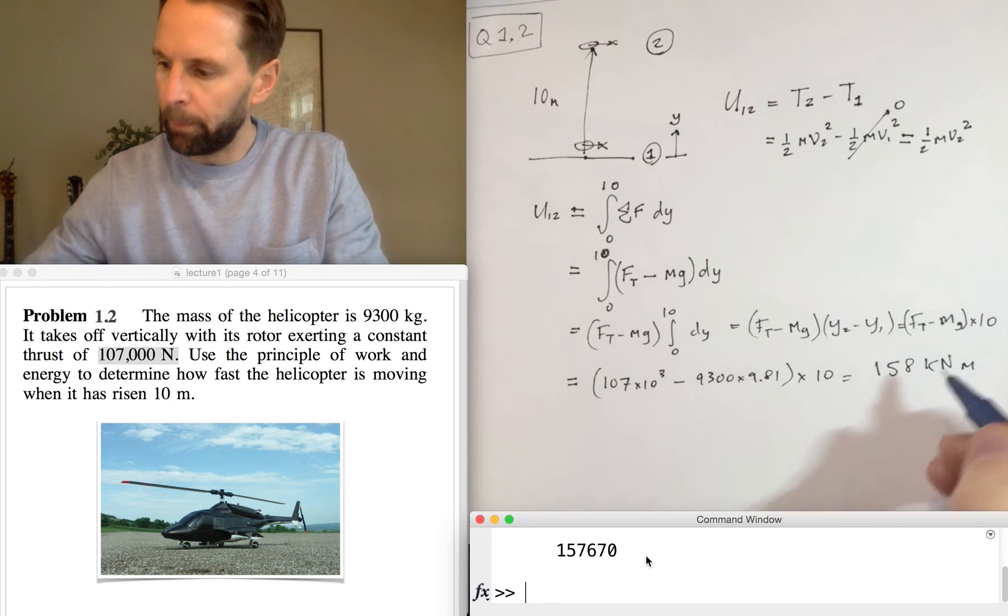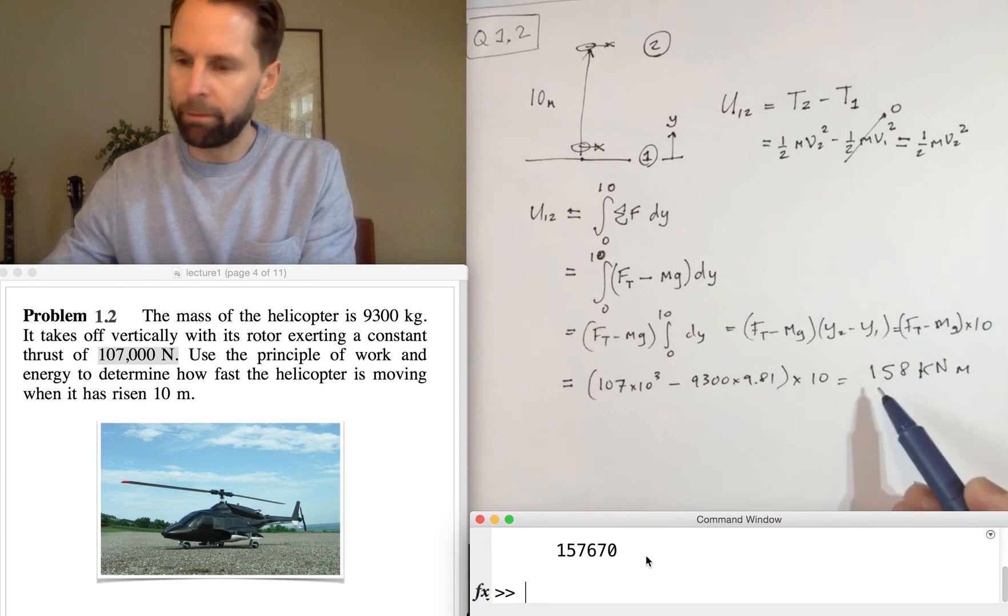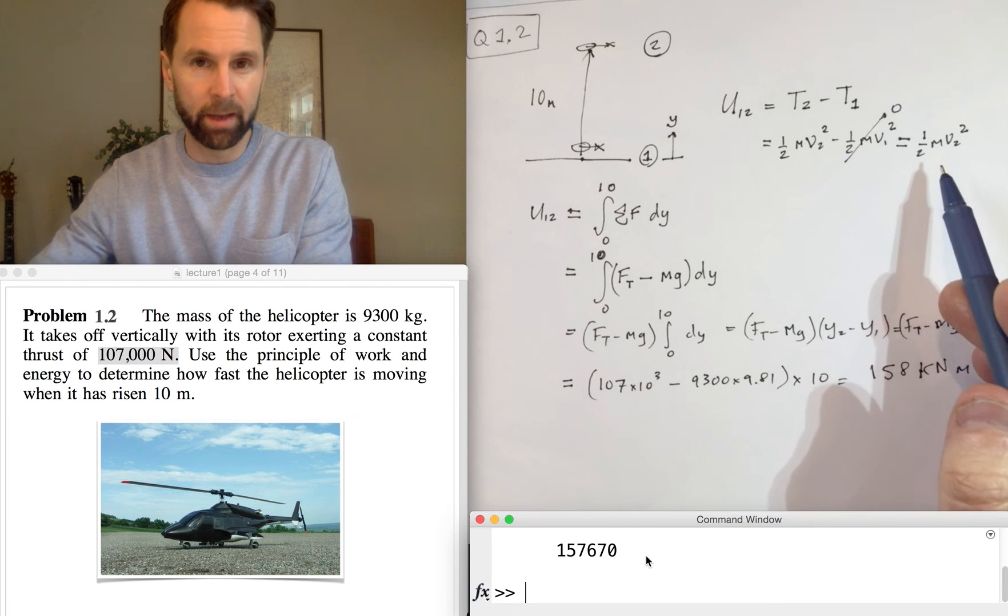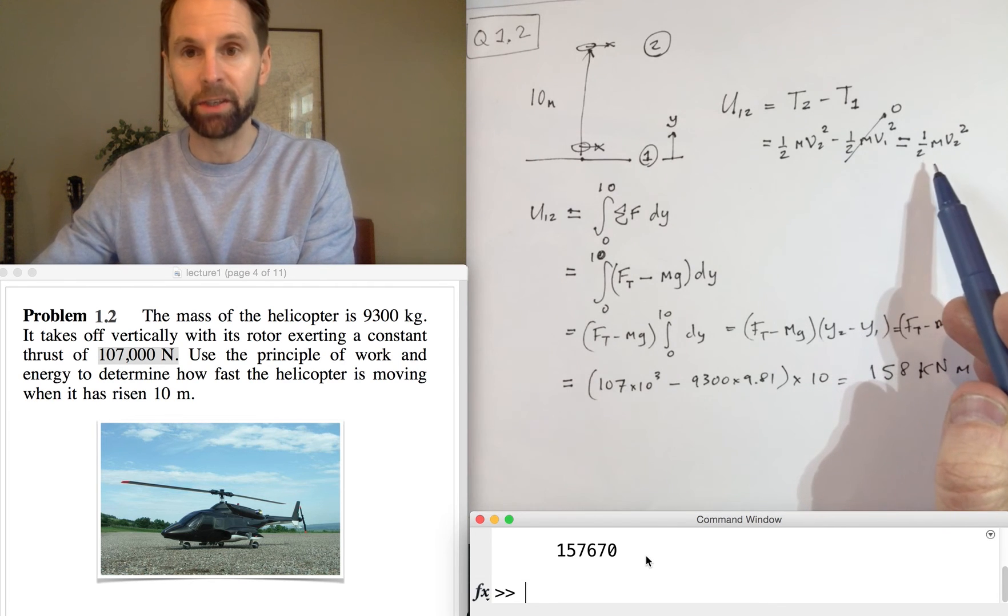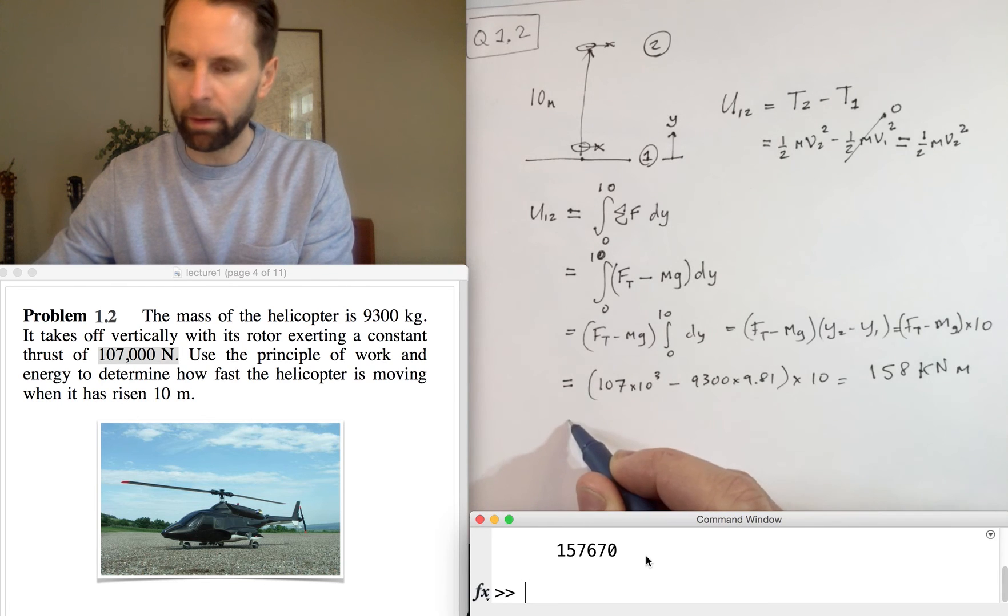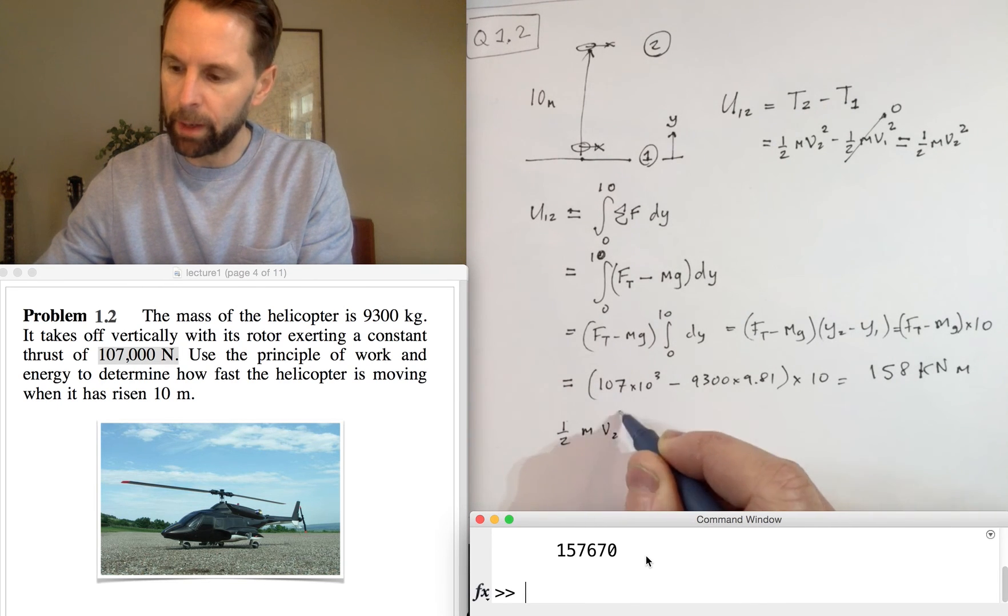Okay, so now we have the work done. We know that that is equal to the change in kinetic energy, which is just the kinetic energy at position two, so we can now write that 1/2 m v2^2 is equal to 158 times 10^3.